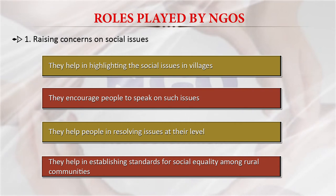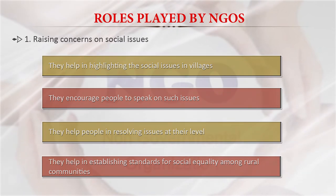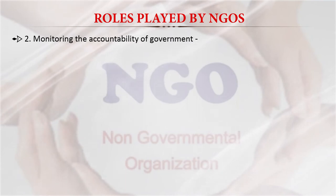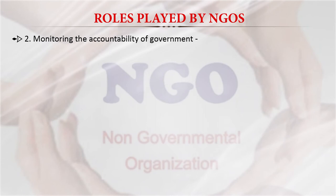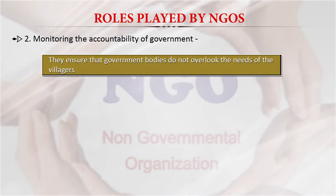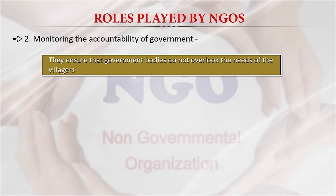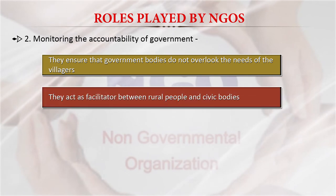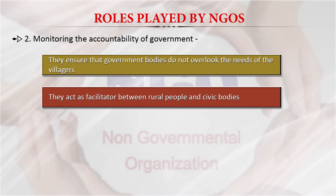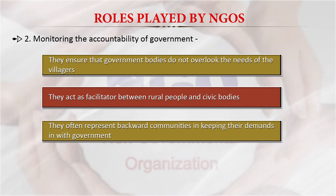Monitoring the accountability of government is one of the major roles played by NGOs. They ensure that government bodies do not overlook the needs of villages. They act as facilitators or catalysts between rural people — specifically the poor — and civic bodies. They represent backward communities in keeping their demands before the government.